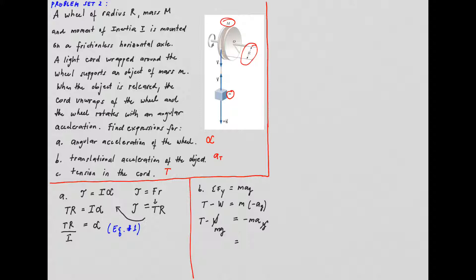So, we have now tension minus mg equals negative ma. I want to remove my negative on this side. Therefore, we can express this as mg minus T.